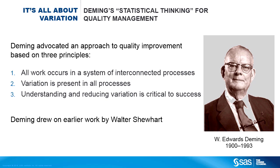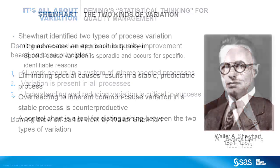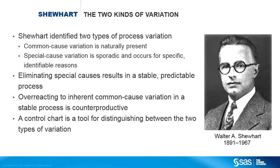He was inspired by and built upon the work of Dr. Walter Shewhart. Shewhart was a physicist who was employed at Bell Labs in the 1920s. He knew that reducing variation in a manufacturing process was the key to improving quality. He recognized two distinct categories of variation: variation due to common causes, which is always present, and variation due to special causes that can be identified and addressed. Shewhart developed a graphical tool called the control chart to distinguish between common cause and special cause variation.